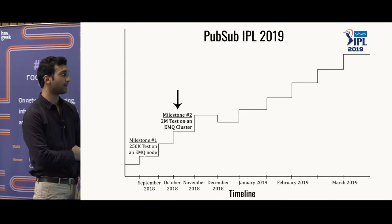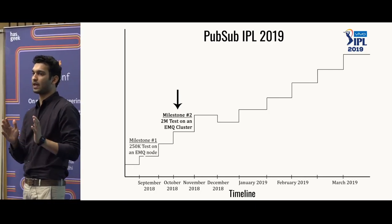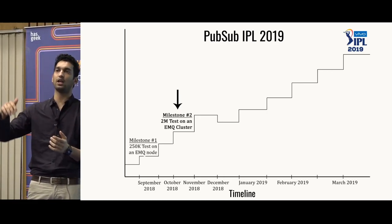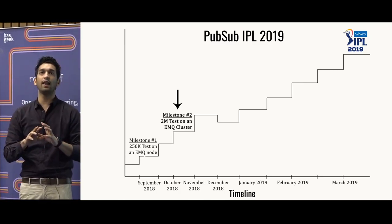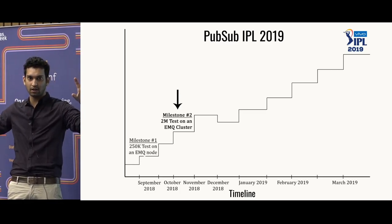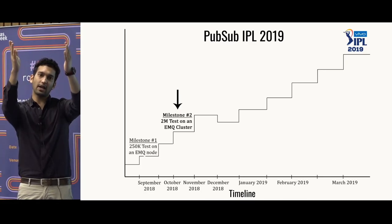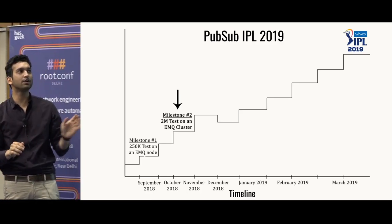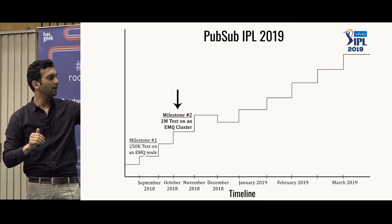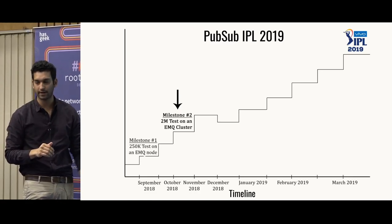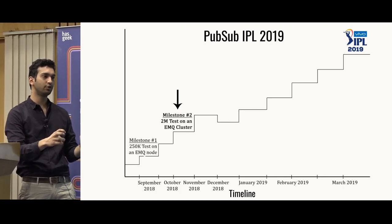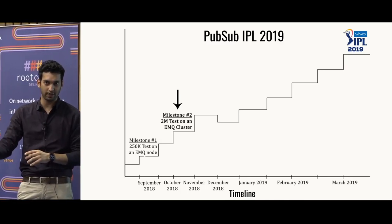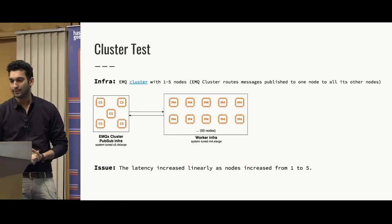Moving to Milestone 2 — we had an application running on one node for 250K connections. For 50 million connections, worst case we could partition clients so certain clients connect to one node and others to another. We realized we had a solution to deliver in production for IPL. But the second milestone was: can we increase from 250K to 2 million? If we can do 2 million on one cluster, we can do 20 million with 10 such clusters. We wanted a horizontally scalable system.